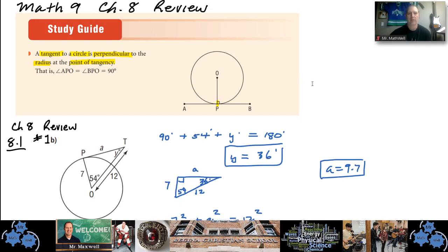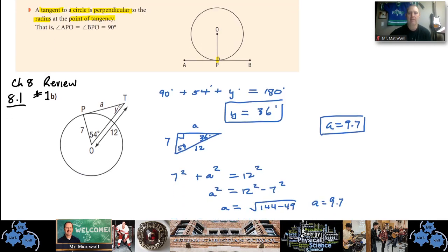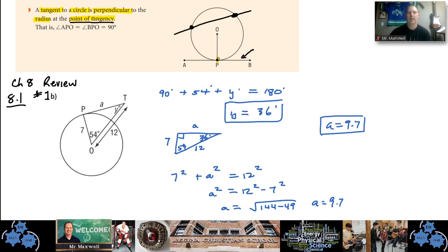The first point I'm going to talk about is a tangent line. A tangent line is a line that passes not through the circle. A line that passes through the circle and hits it twice is called a chord — also called a secant line. A tangent is a line that doesn't pass through but touches the very edge of the circle at one point, not two. That point is called the point of tangency.